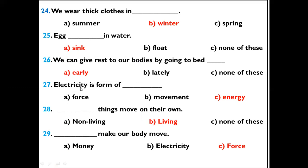Question 27: Electricity is a form of dash. Options: Force, movement, energy. The right option is energy. Electricity is a form of energy.